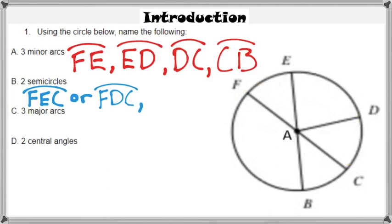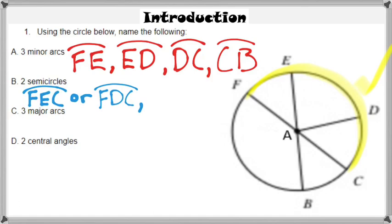A minor arc is only going to use two letters to identify it — FE is a two-letter arc. A semicircle requires three letters to describe it, so FEC or FDC are the ways to name those semicircles. CBF would be the semicircle on the other side of the circle.